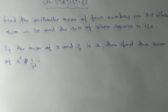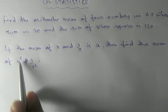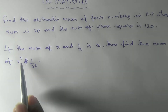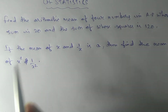The first question: find the arithmetic mean of four numbers in AP whose sum is 20 and the sum of whose squares is 120. The second question: if the mean of x and 1/x is 'a', then find the mean of x² and 1/x². We'll solve the second one first, then the first one.